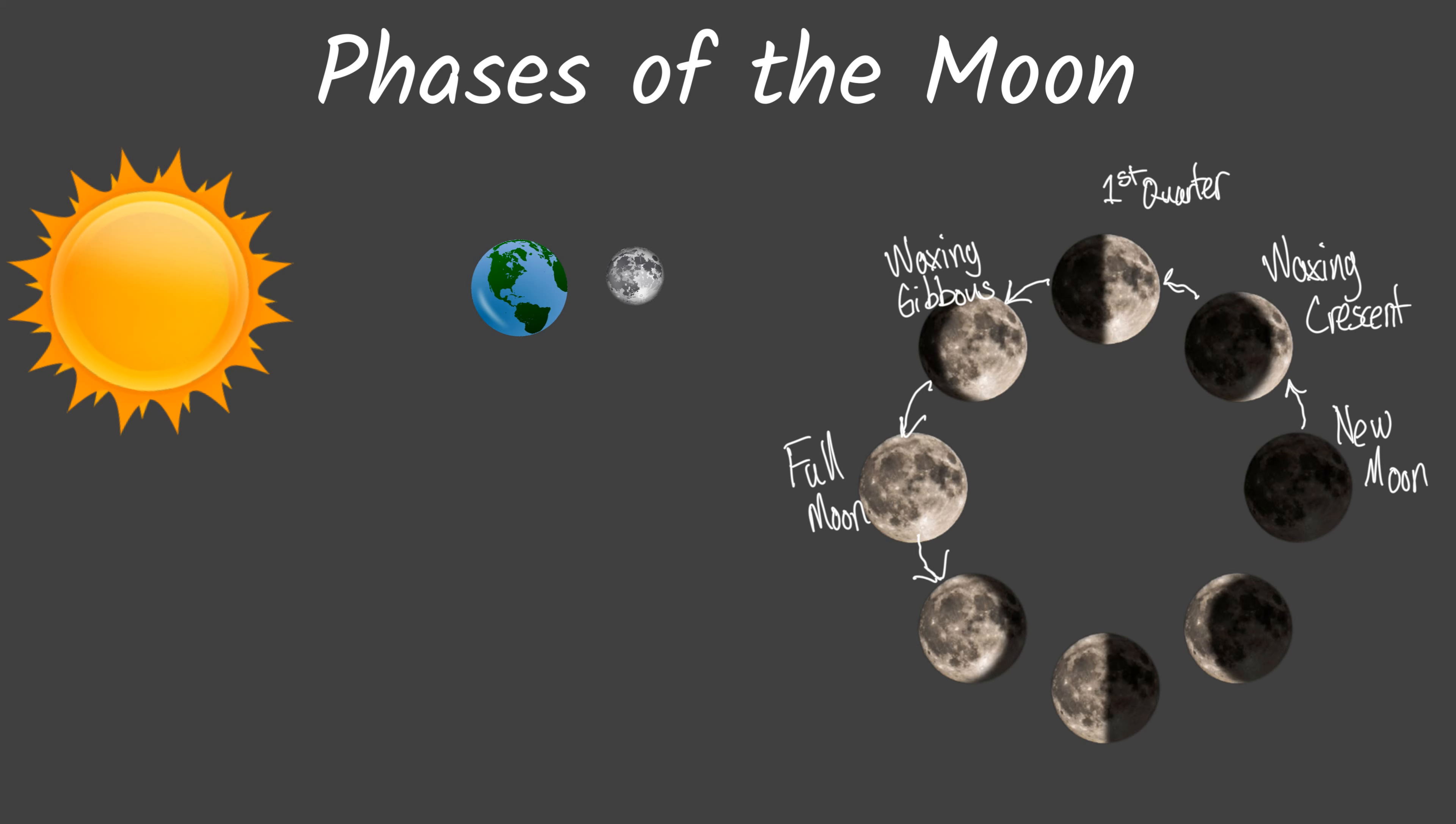A waxing gibbous then moves to a full moon. A full moon then begins to wane, or we get more shadow. So we have a waning gibbous. A waning gibbous moves to a third quarter moon. A third quarter moon goes to a waning crescent. And then a waning crescent returns back to a new moon.